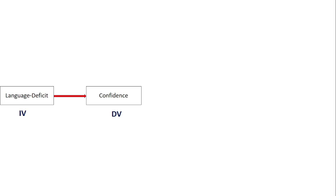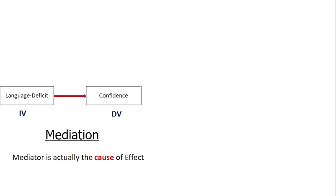The language deficit affects the confidence of an individual. Language deficit means individuals facing problems in the writing or speaking of a particular language. The mediator is actually the cause of the effect — the variable or attribute that is causing the effect. In this case, shyness is the mediator because the language deficit creates shyness, and shyness then causes the low confidence of the individual.